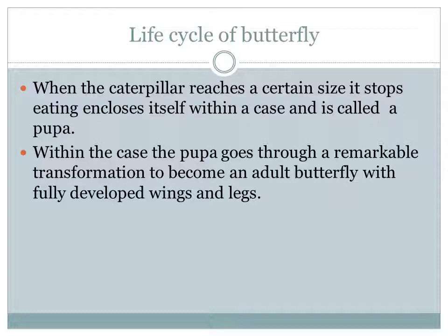After reaching a certain size, it stops eating and goes into a case called pupa. Within the pupa, remarkable transformation takes place. From that pupa, a fully developed butterfly will come out. This is the life cycle of a butterfly. Starting from egg up to an adult, it undergoes serious changes — these serious changes are called metamorphosis.